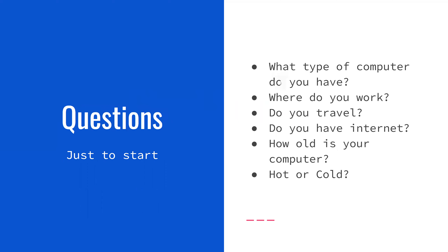Some things to think about with cloud storage: what type of computer do you have, where do you work, do you travel, do you have internet, how old is your computer? You're going to want to think about a solution that works best for you. There are so many options — you don't have to feel shoehorned into a specific way to back up your files. For example, if you have good internet, cloud storage is nice because all of your files will be available online and on your computer 24/7. If you have bad internet, cloud storage lets you do as much work or add as many photos as you want, and then the next time you're at the library or a coffee shop with internet, it will automatically upload all of those for you.